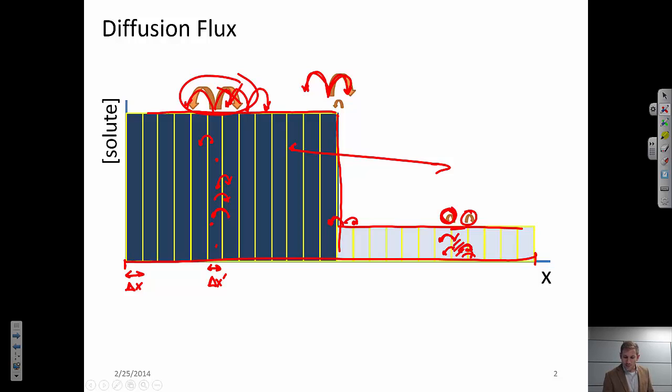So in the constant compositional gradient regions, these probabilities will cancel each other out. The probability that an atom moves from here into this bin is going to be the same as an atom moving from this bin to the left. Same thing over here. But at this boundary I have a much smaller average flux from, let's say, bin 2 to bin 1 than I do from bin 1 to bin 2. And I can represent that by arrows showing the flux.